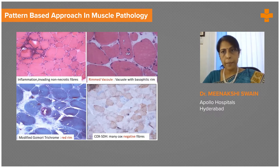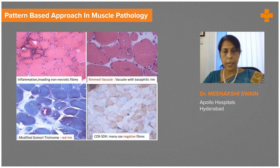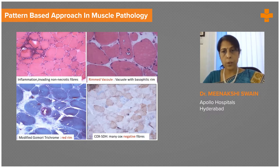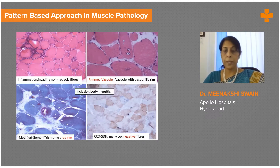Inclusion body myositis is often accompanied by what are known as rimmed vacuoles. You're lucky if you find them — they're not always seen in all biopsies. You get a cytoplasmic vacuole which is rimmed by basophilic debris, and that is highlighted on a modified Gomori trichrome stain. Often one also sees a lot of COX-deficient fibers. So if you have a COX-SDH stain with many COX-deficient fibers and these features, you're probably dealing with an inclusion body myositis.